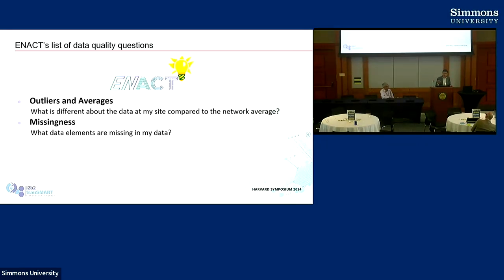There's a question of what is missing. There are hundreds of thousands of possible data elements in ENACT, and many sites are missing codes that they don't use. There are different ways of coding labs, and LOINC codes vary slightly from site to site. That missingness is not particularly important. But if a broad swath of labs are missing or there are no procedure data, that is missingness that might be important and worth flagging.